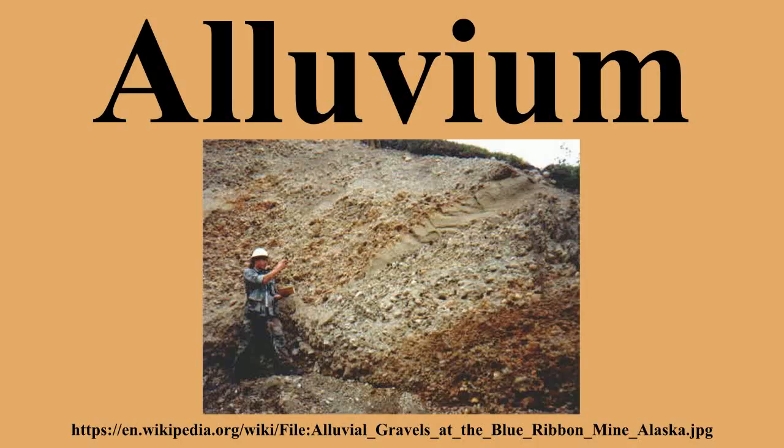Alluvium is typically made up of a variety of materials, including fine particles of silt and clay and larger particles of sand and gravel. When this loose alluvial material is deposited and cemented into a lithological unit, or lithified, it is called an alluvial deposit.